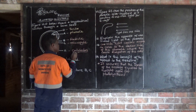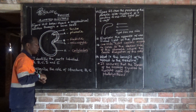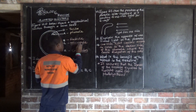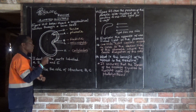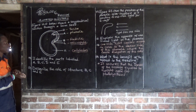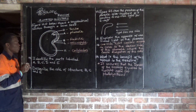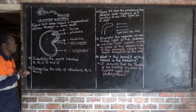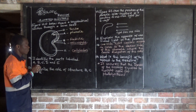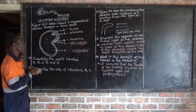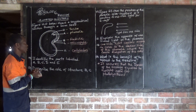So the function of the cotlidon is that it is where food and enzymes are stored. Then, the micropub — this is an opening where water enters from. So water enters into the seed through a very tiny opening which we call a micropub.